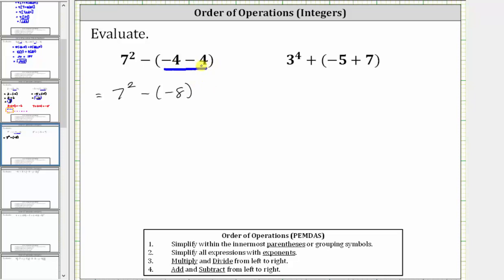If we're not sure this difference is negative eight, remember we can write every subtraction problem as an addition problem. Subtracting a positive is equivalent to adding a negative, which means negative four minus four is equivalent to negative four plus negative four. Using the formal rules for adding integers with the same sign, we add the absolute values and then keep the original sign. The absolute value of negative four is four, and positive four plus positive four equals positive eight, so negative four plus negative four equals negative eight.